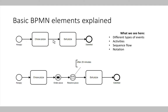Furthermore, there are events. Events show that something happened outside or inside the process. A start event, which is a simple circle, starts a process. A bold circle is an end event — it ends a process. Events represented by two circles are intermediate events, meaning something happens during the process execution. For example, a pizza is ordered or a pizza is received.